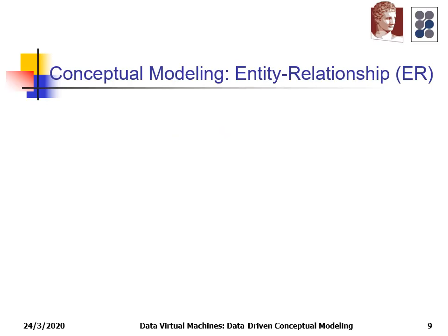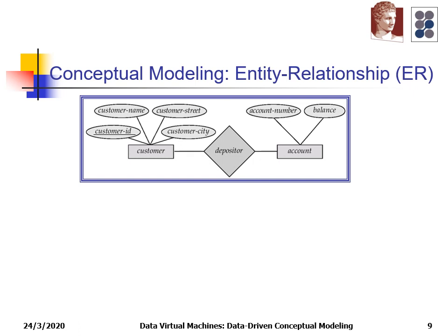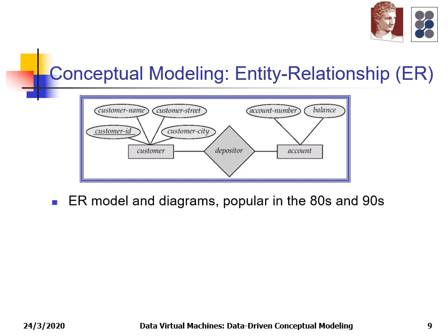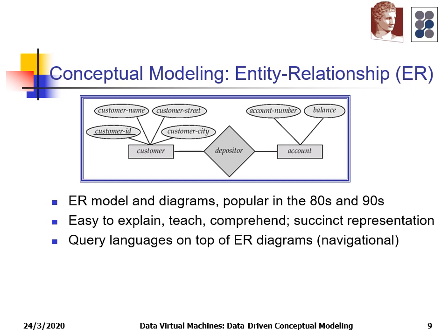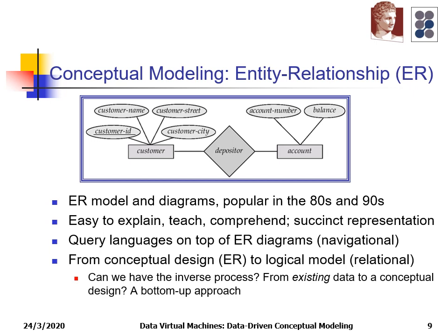The most well-known conceptual model is the entity-relationship model — a simple model consisting of entities, attributes, and relationships, popular in the 80s and 90s. It is easy to explain, teach, and comprehend. In the past, we would start from a conceptual design (the ER diagram) and move to a logical model such as the relational model. The question we have is whether we can have the inverse process: from existing data, build a conceptual design similar to the ER.